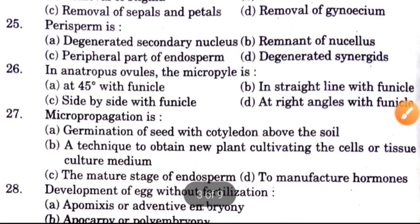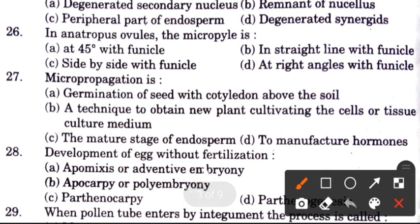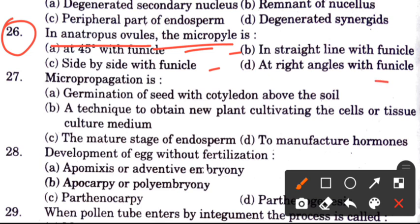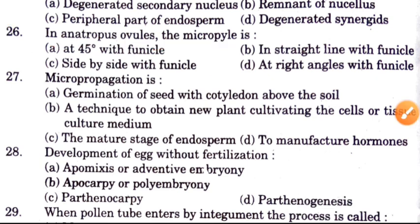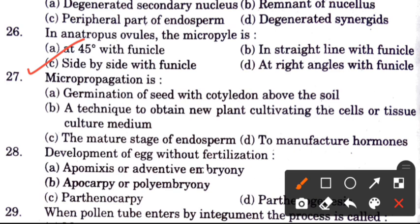Question 26: In anatropous ovules, the micropyle is — options are at 45 degrees with the funicle, in a straight line with the funicle, side by side with the funicle, or at right angles with the funicle. The answer is C, side by side with the funicle.